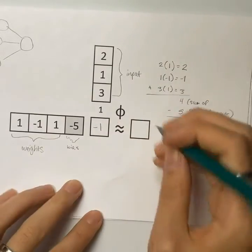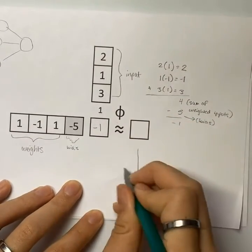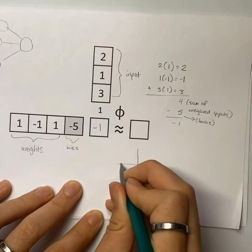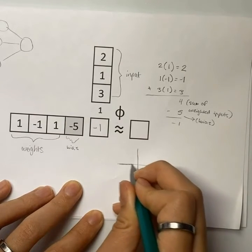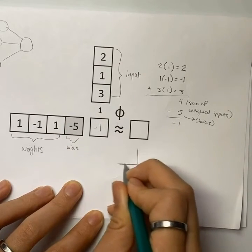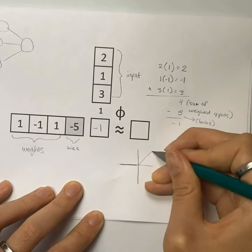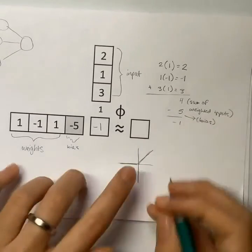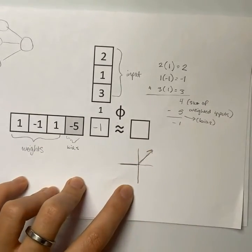Now we're going to put this through a ReLU function. What is a ReLU function? Essentially it takes all of the inputs that are negative and it turns them to 0 and all of the inputs that are positive will be unaffected.